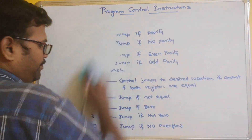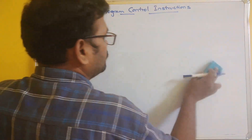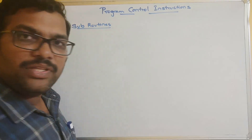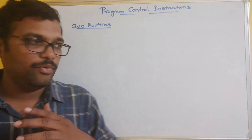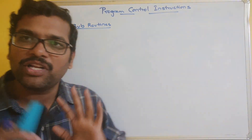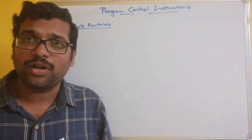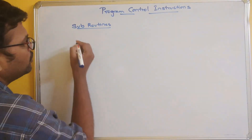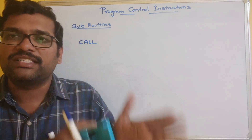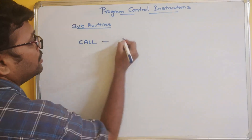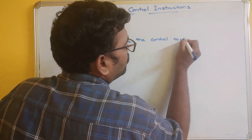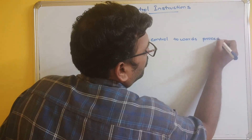Let's move on to the next category — subroutines. Subroutines are similar to procedures. You might have knowledge of C programming, Java, or Python — the functions concept there is the same as subroutines. A subroutine is also called a function or a procedure. There are two different mnemonics here. One is CALL, which moves the control towards the procedure definition or desired location.